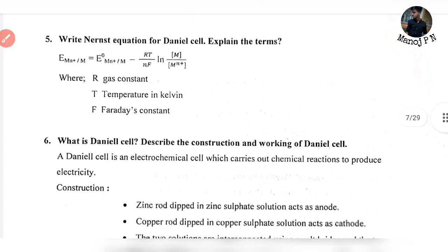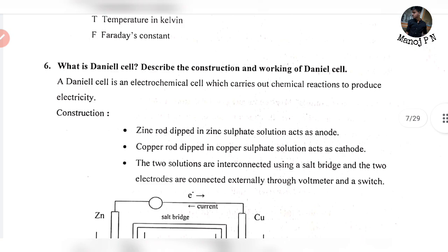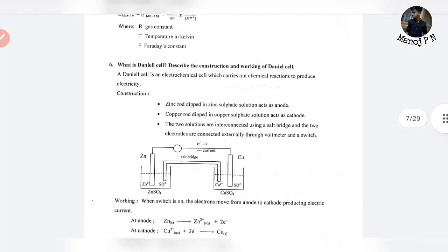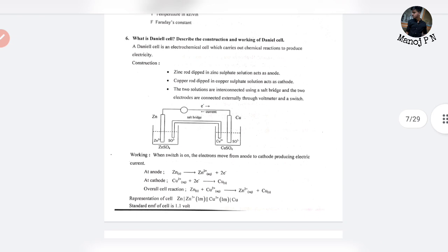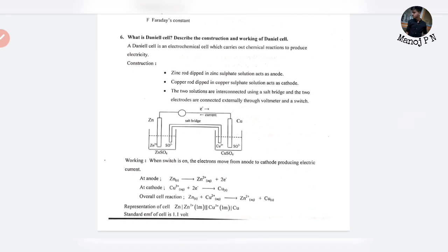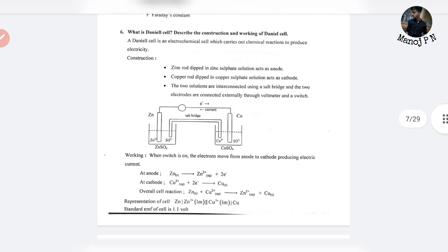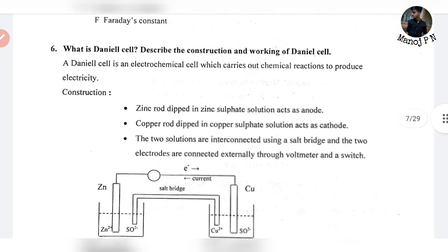What is a Daniel cell? Describe the construction and working of Daniel cell. A Daniel cell is an electrochemical cell which carries out chemical reactions to produce electricity.